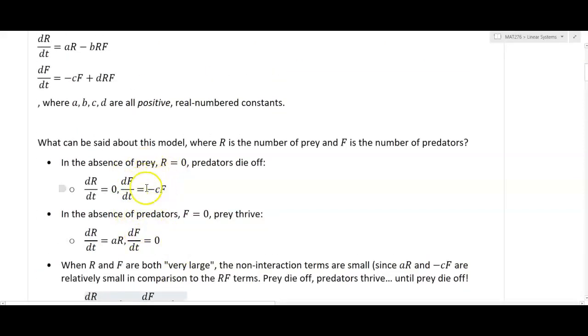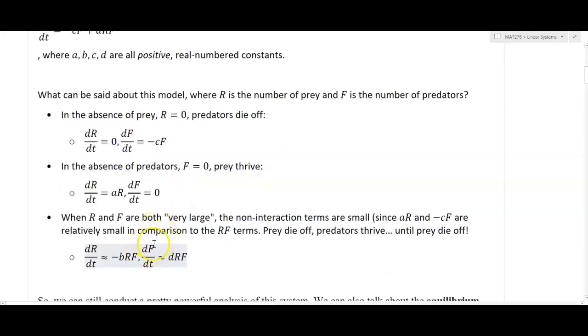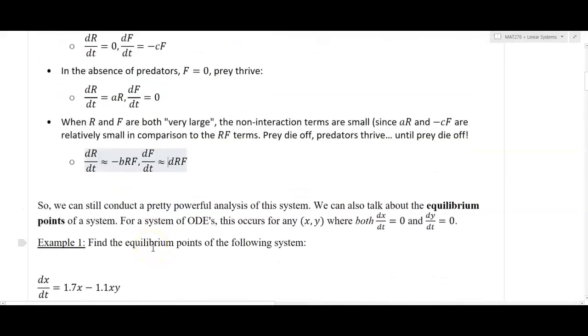When we start to lose prey, the predators die off, and there's this really complex interaction. So we can still conduct a pretty powerful analysis of this system. This is why Lotka and Volterra found these models powerful. And we can also talk about the equilibrium points of a system.